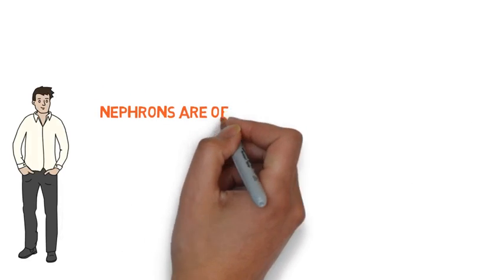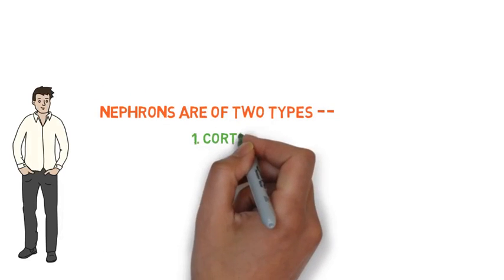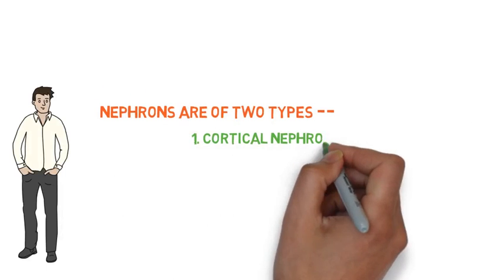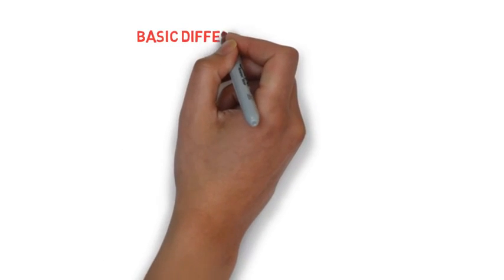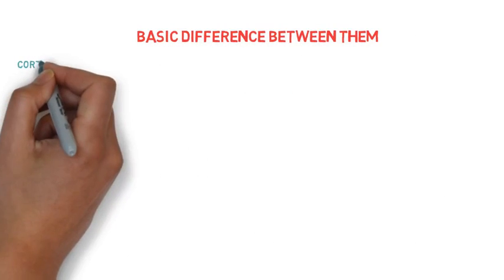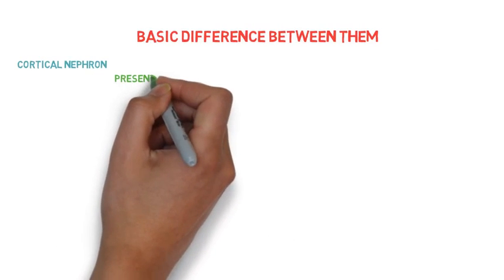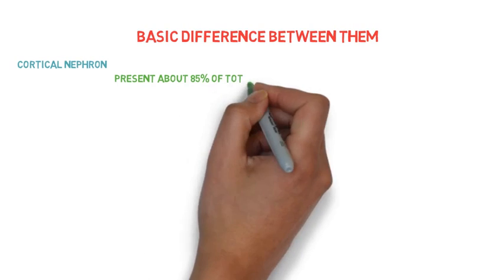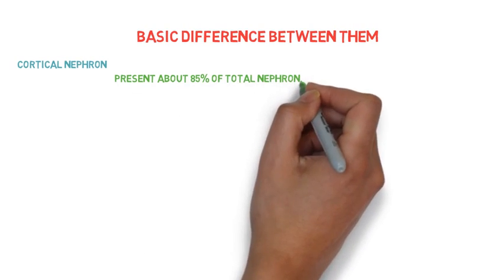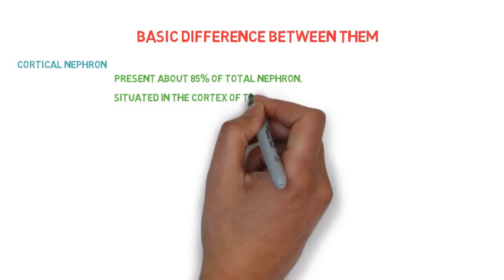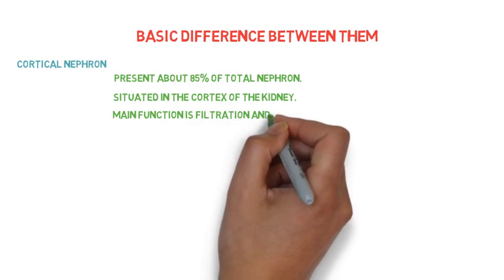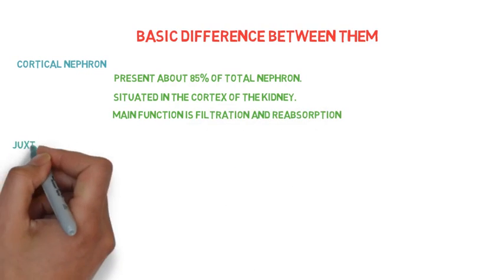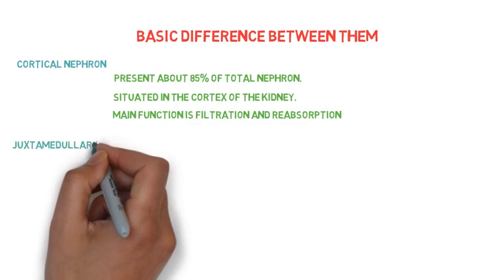The nephron is the structural and functional unit of the kidney. Nephrons are generally of two types: number one, cortical nephron, and number two, juxtamedullary nephron. The cortical nephron is present in about 85% of total nephrons, situated in the cortex of the kidney. The main function of cortical nephrons is filtration and reabsorption.